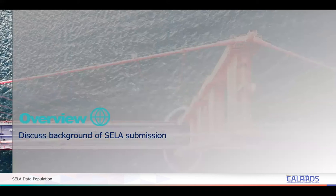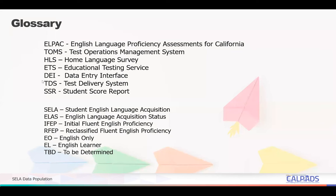First, we will start with some general information related to student English language acquisition and then introduce key concepts related to the data collected. Here's a list of terms and acronyms you will encounter throughout this training. The terms at the top section are related to the ELPAC process and TOMS system, while those listed at the bottom are the common terms used in CALPADS reporting. Additional resources are included in the notes section of this slide should you need more information.